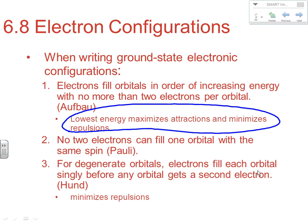No two electrons can fill one orbital with the same spin — that's the Pauli Exclusion Principle. When we're looking at two electrons in one orbital, one has to be a positive spin and the other has to be a negative spin. So first we fill by Aufbau, second we fill by the Pauli Exclusion Principle.